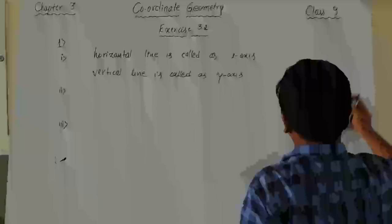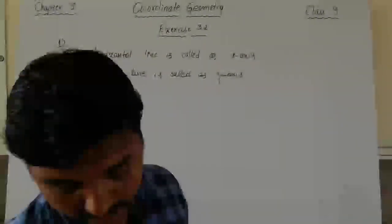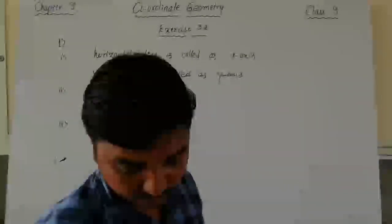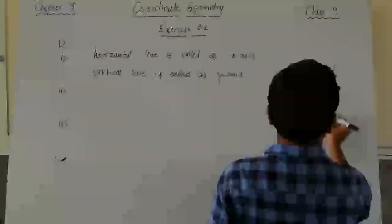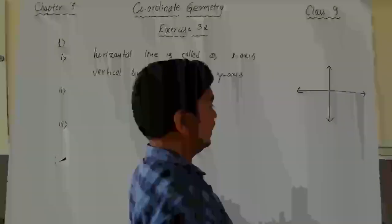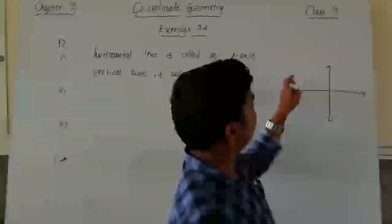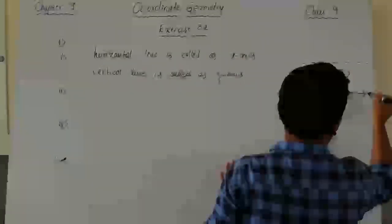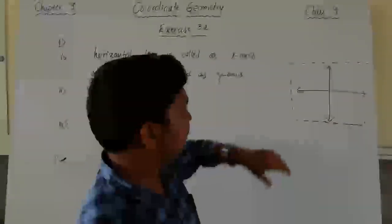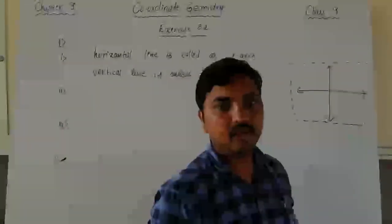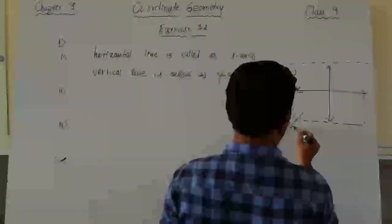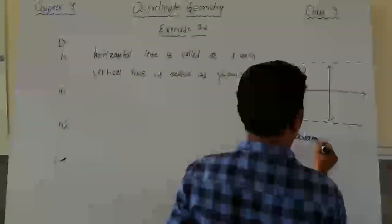The second sub-question asks: what is the name of each part of the plane formed by these two lines? When we draw the two lines, the coordinate plane is formed. This plane divides the region into four equal parts. Each part is called a quadrant. They are numbered as first, second, third, and fourth quadrant. So the answer is: each part is called a quadrant.